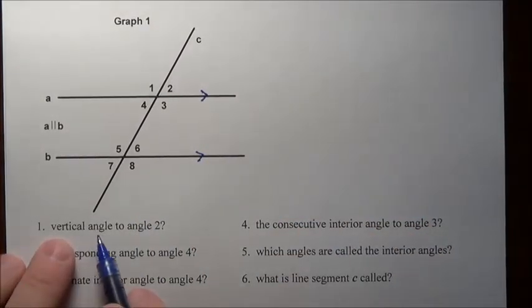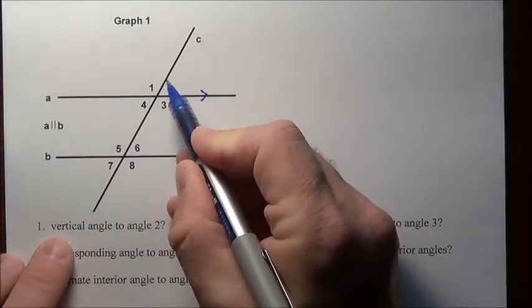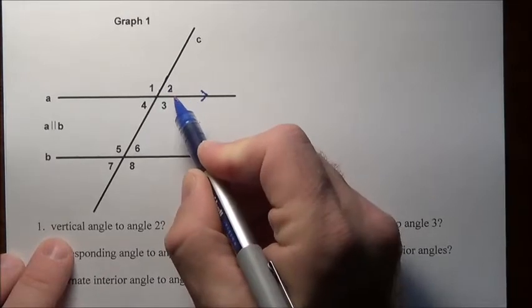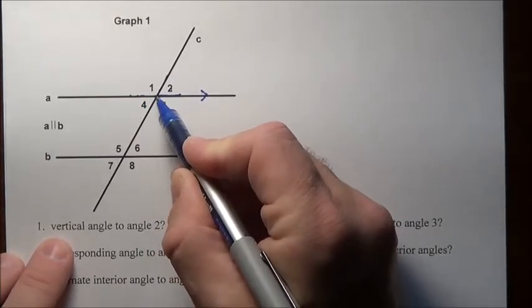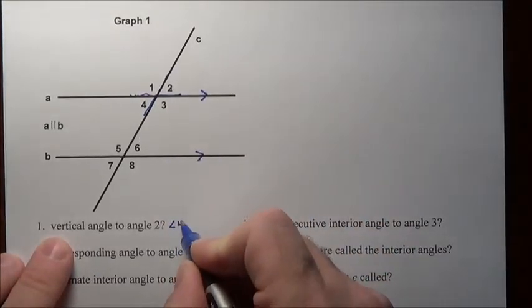Now it's going to ask us some questions. It says, what is the vertical angle to angle two? Well here's angle two. Its vertical angle - two is made up of this line and this line, and notice when they come out the other side, that's here and here. So that's going to be four. The answer is angle four.